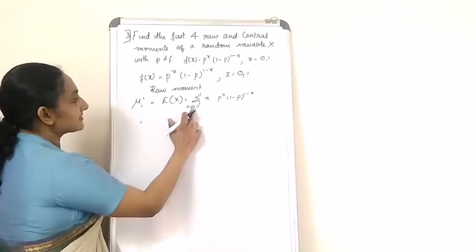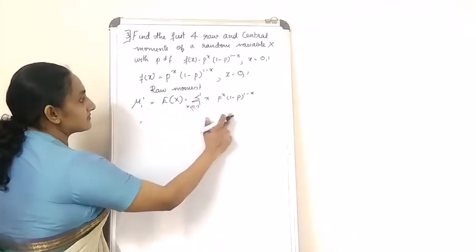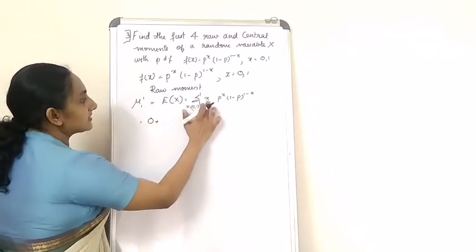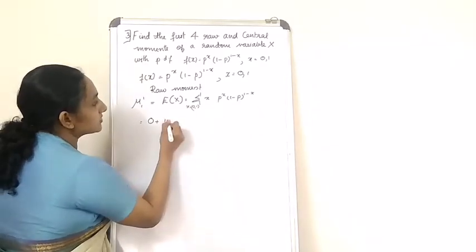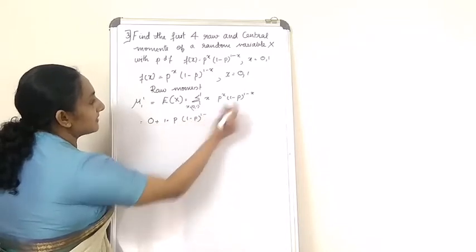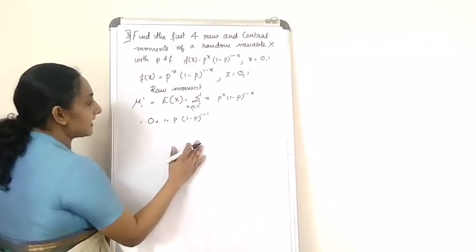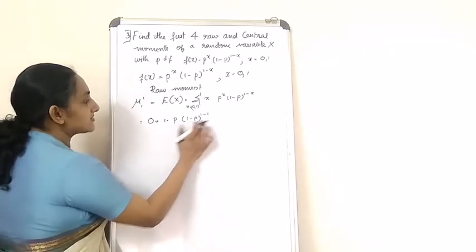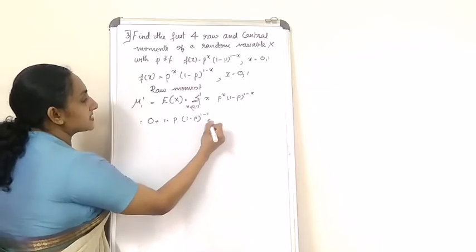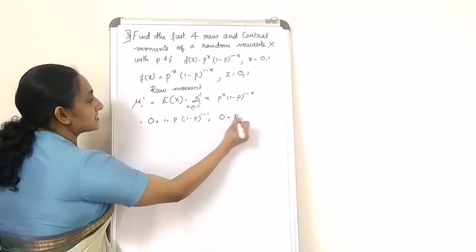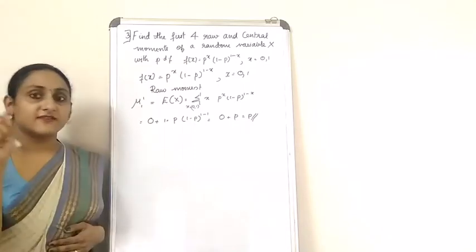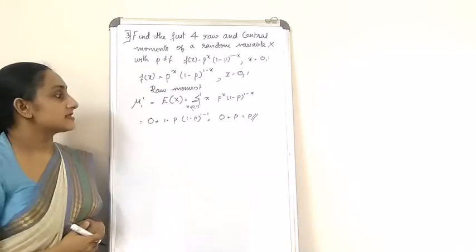When x takes the value 0, this term becomes 0. When x takes the value 1, this term becomes 1 * p * (1-p)^(1-1). So (1-p)^0 = 1, giving us 0 + p = p. So the first raw moment μ₁' is equal to p.